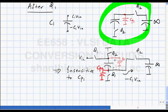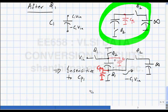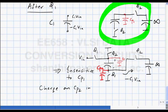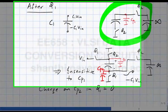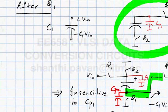This bottom plate will also have a parasitic Cp2. During phi1, charge on Cp2 is 0. During phi2, Cp2 is connected to the infinite capacitor, but fortunately there was no charge on Cp2, so it cannot dump any charge onto the infinite capacitor. The arrangement is insensitive to Cp2.